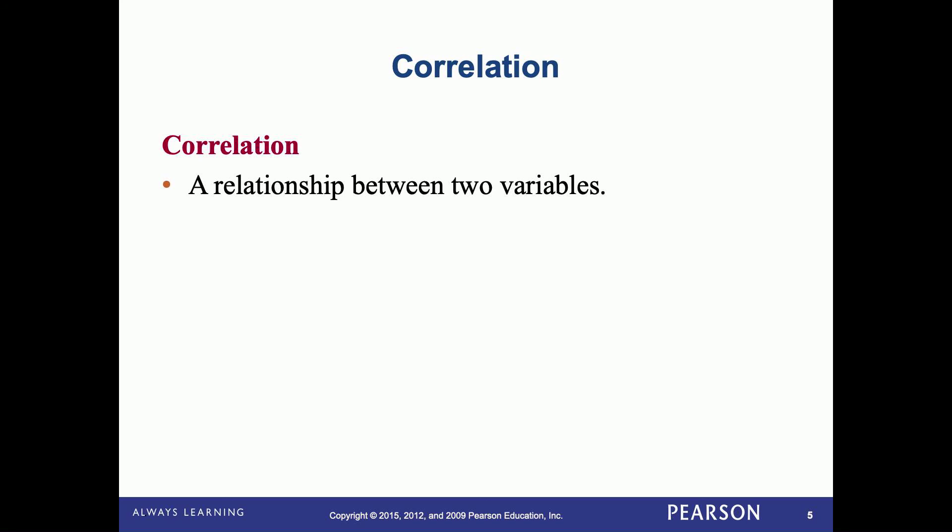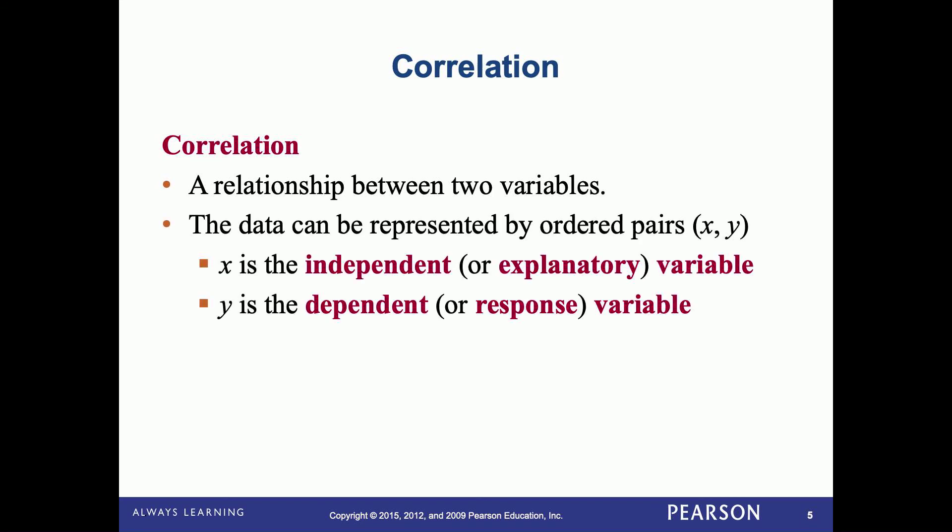Correlation is a relationship between two variables. There are two types of variables. Typically, our data set is represented by an ordered pair (x, y), where x is the independent or explanatory variable. Independent means x could take on any value at all.